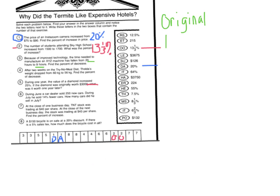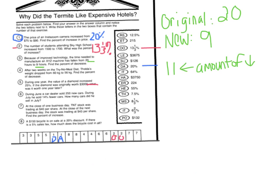Let's take a look at number 3. I'm hoping you're working on your worksheet with me. Number 3 says because of improved technology, the time needed to manufacture an XYZ machine has fallen from 20 hours to 9 hours — find the percent of decrease. So first identify the original and the new. It says it fell from 20 hours to 9, so it started at 20 and went down to 9, and the amount of decrease is 20 minus 9, which is 11.